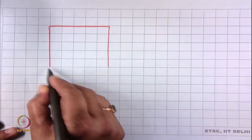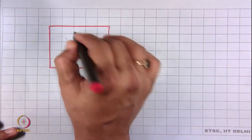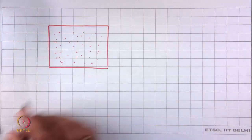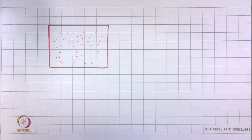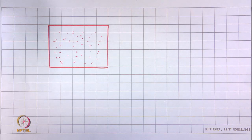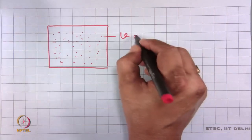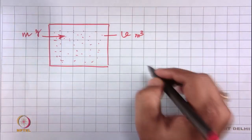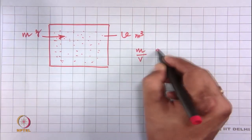There are two types of expression. One is called absolute humidity. Suppose this is a chamber or room — there is water vapor present in the room, not in liquid form but in vapor form. The mass of water present in the atmosphere is called the absolute humidity, meaning the mass of water present in a unit volume of air. So if the volume of the room is V cubic meters and total water content is m grams, absolute humidity is expressed as m/V grams per cubic meter.